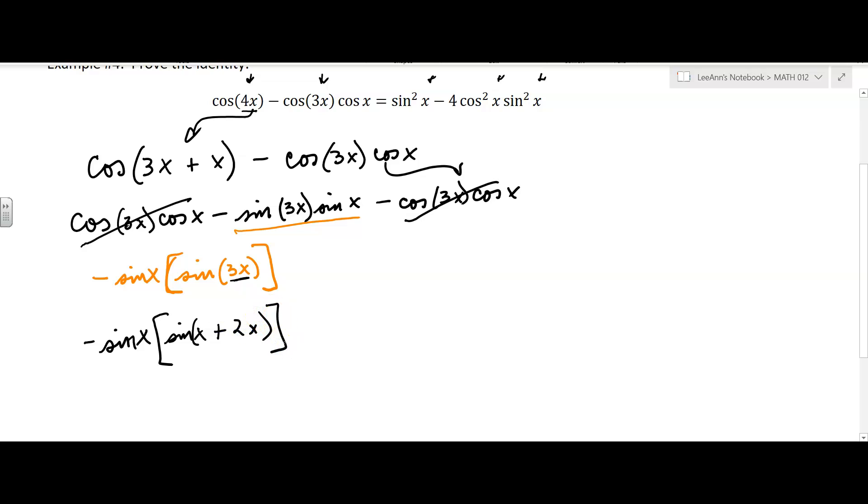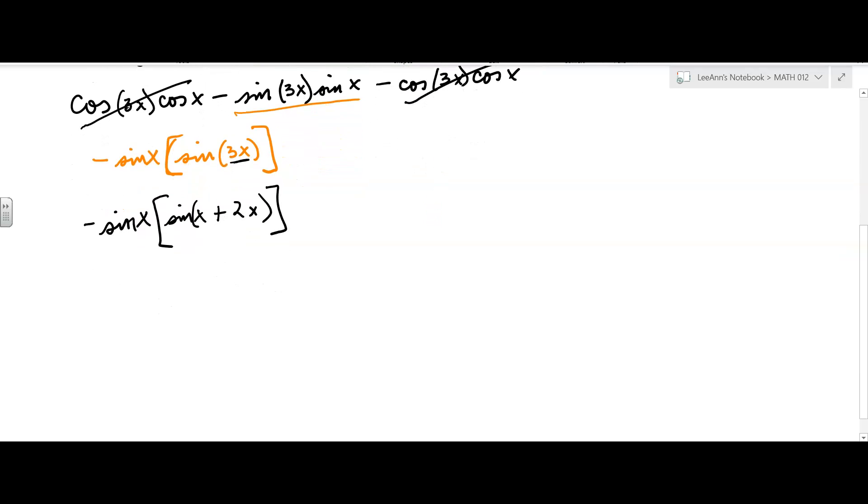And then I'll use the sum formula for sine. So, I still have a minus sine x out front, and now it's going to be sine x, sine alpha, cosine beta plus, and then it's going to be cosine alpha, sine beta. Oh, I switched it, I switched it, that's not what I meant to do. Cosine x, sine 2x. Okay, so let me make sure I wrote that right. Sine alpha cosine beta plus cosine alpha sine beta.